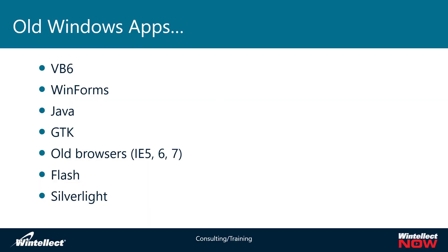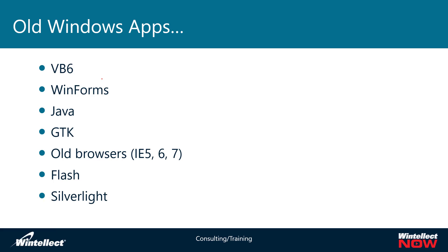Maybe you're stuck with an old app and you're trying to figure out how in the world you can take this old application to the cloud. Maybe it's an old VB6 app or WinForms app and you have been using this as a line-of-business application for years and haven't been able to upgrade it, or maybe the vendor went out of business but you're still using the old software — it's a critical app that's really useful in your business.